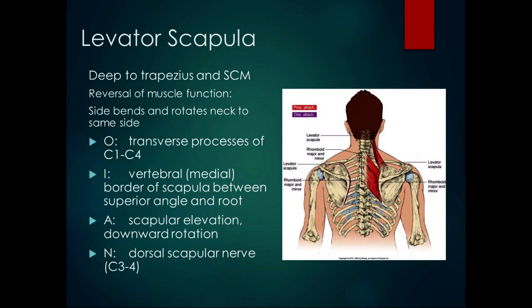The levator scapula is innervated by the dorsal scapular nerve — it makes sense, it's the dorsal side of the scapula. The innervation for upper extremity muscles is not as organized as the lower extremity muscles, so it takes a little more memorization.